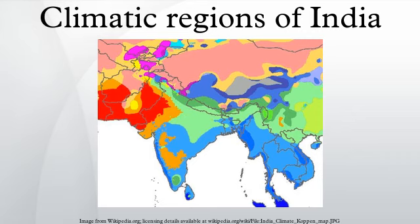Tropical wet and dry or savannah climate: most of the plateau of peninsular India enjoys this climate, except a semi-arid track to the east of the Western Ghats. Winter and early summer are long dry periods with temperatures above 18 degrees Celsius. Summer is very hot and temperatures in the interior low-level areas can go above 45 degrees Celsius during May. The rainy season is from June to September and the annual rainfall is between 75 and 150 centimeters. Only central eastern Tamil Nadu falls under this track and receives rainfall during the winter months of late November to January.